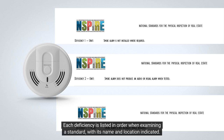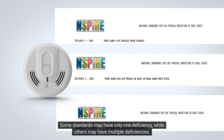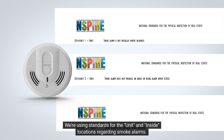Each deficiency is listed in order when examining a standard, with its name and location indicated. Some standards may have only one deficiency, while others may have multiple deficiencies. We're using standards for the unit and inside locations regarding smoke alarms.